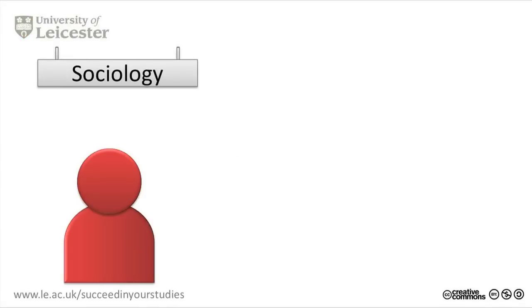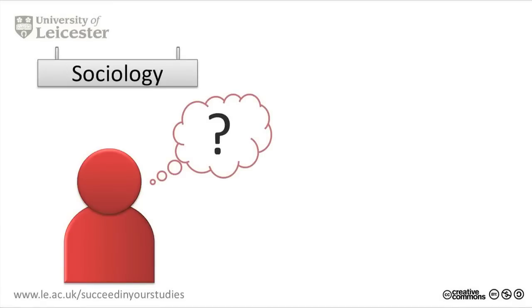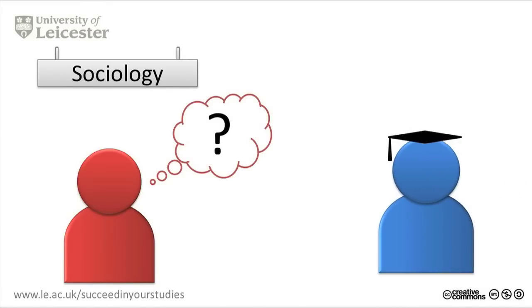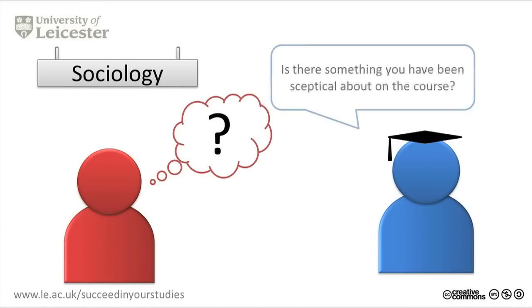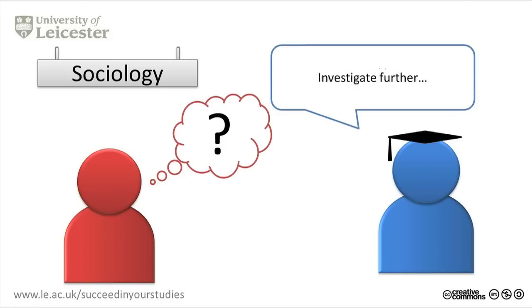This is Jen. She studies sociology. Jen was having difficulty thinking of a suitable research question for her dissertation. Her tutor suggested that there may have been something on her course that she'd been sceptical about, and if there was, then this could be a chance for her to investigate it further.